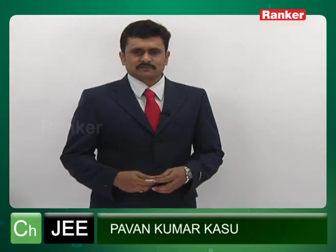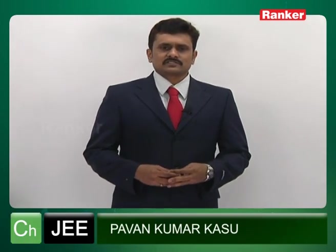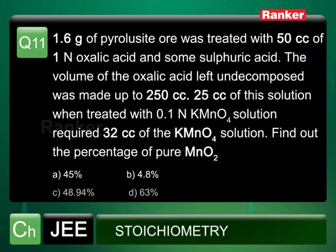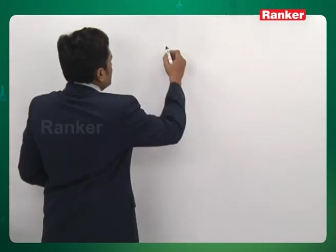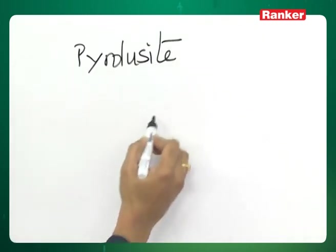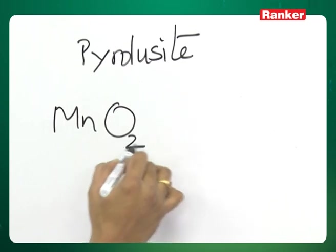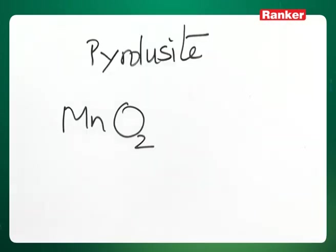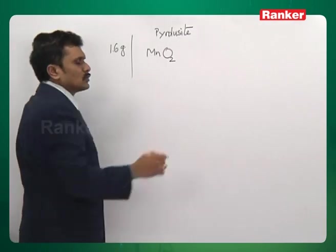Problem 11: We have 1.6 grams of pyrolusite ore which was treated with 50 ml of 1 normal oxalic acid and some sulfuric acid. The volume of the oxalic acid left undecomposed was made up to 250 ml. 25 ml of this solution when treated with 0.1 normal KMnO₄ solution required 32 ml. We are asked to find the weight percentage of pure MnO₂. The pyrolusite ore is an ore of manganese, and the compound is MnO₂.